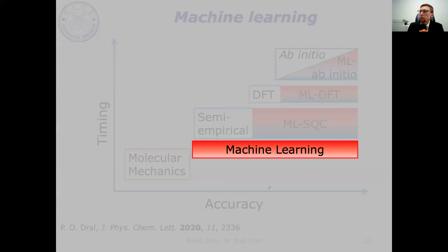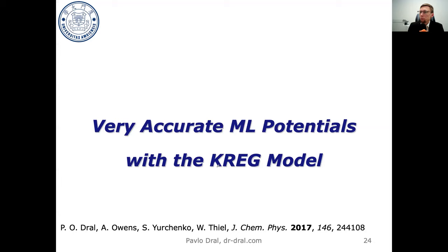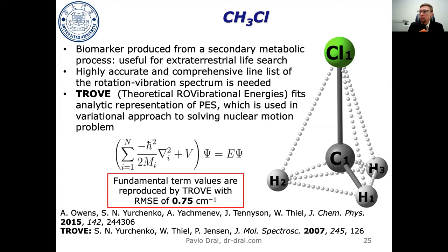Beyond improving existing methods, we can also use machine learning to calculate properties directly — the computationally cheapest approach. This is still possible, though it requires more data and is less generic. The most straightforward application is learning potential energy surfaces, a very popular exercise in machine learning with many methods available.